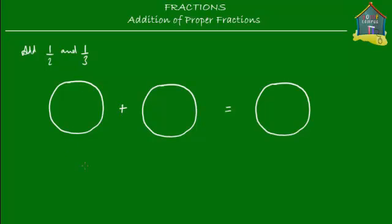We're going to mark one upon two on the first pizza and one upon three on the second pizza, and then find out how much that's equal to on the third pizza. So we're going to add half and one third and find out the result.